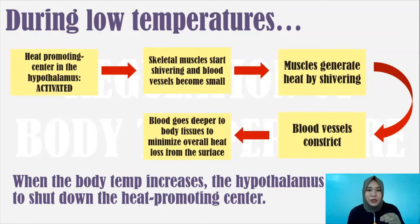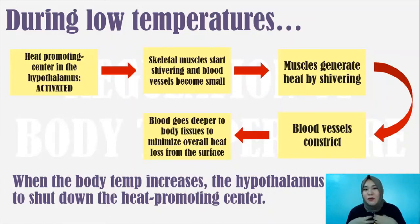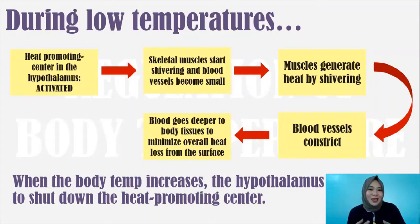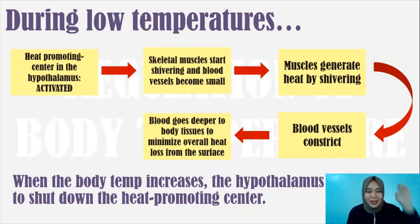The blood goes deeper into the body tissues to minimize overall heat loss from the surface. The more heat we conserve, the more we can deliver it to the different parts of the body — organs, tissues, and muscles need heat to function well. When the body has supplied enough heat distributed to its different parts, your body temperature will then increase — not abnormally, but back to the normal body temperature of 36 to 37 degrees Celsius.